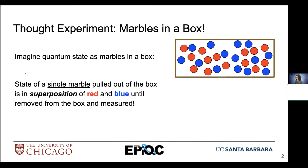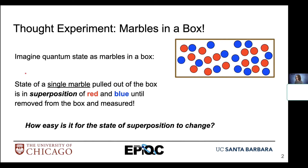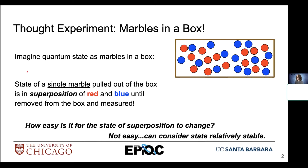We have a relatively stable state with these marbles sitting inside of this box. So how easy is it for the state of superposition to change? The superposition has a particular probability associated with the likelihood of observing one state over another. That's relatively fixed in this thought experiment because the box is closed — it's not easy for our state to change. It's going to maintain a relatively stable state, so our likelihood of observing either a red marble or a blue marble is going to be consistent.